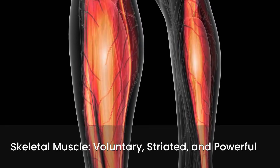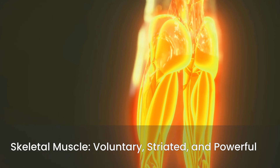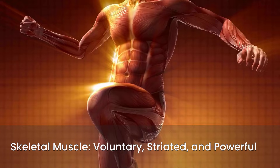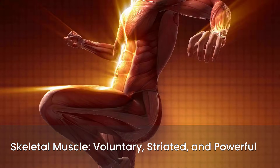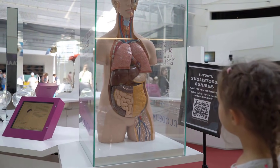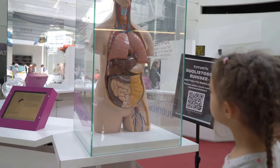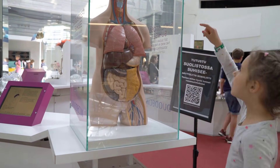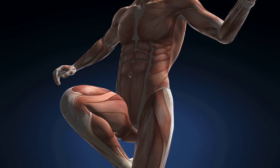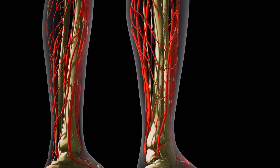Skeletal muscle is voluntary and striated, meaning it has a striped appearance under a microscope. It's responsible for conscious body movements, attaching to bones via tendons, and its contraction is powerful and rapid. Smooth muscle is involuntary and non-striated, found in the walls of internal organs like the digestive tract, blood vessels, and bladder. Smooth muscle contractions are slow and sustained, regulating processes like digestion and blood pressure.